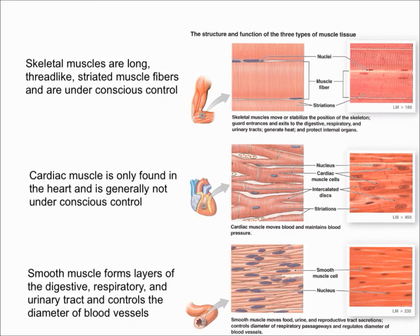It is a general consensus that skeletal muscles are the only ones that you have conscious control over, which is pretty important to differentiate between the three. Skeletal muscles are essentially long and thread-like, and they are striated. As shown on the diagram to your right, they also stabilize your skeleton and essentially protect your internal organs as well.